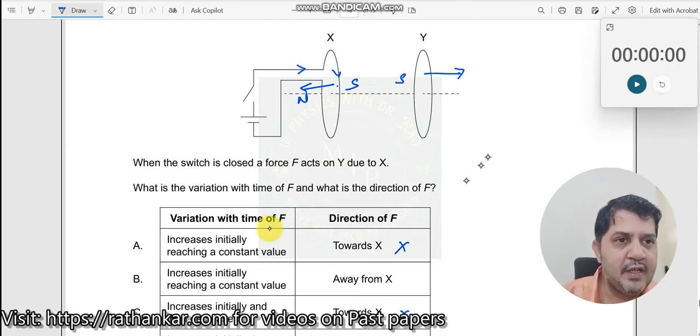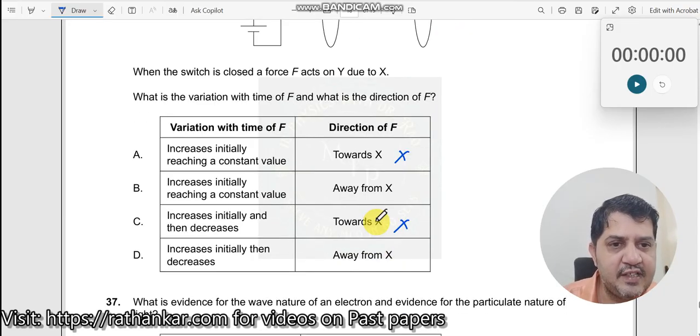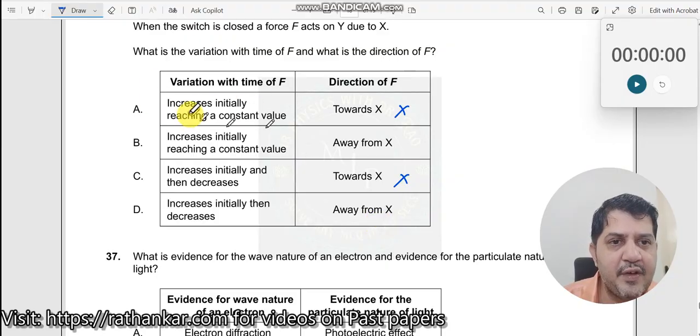And then what is the next end? Variation with time of F. So does it keep on constantly moving away? No. It acts only for a short interval of time and after that, it starts decreasing and becomes zero when the current in the coil becomes steady over here. Now let us read the question over here. Variation with time of F, how does the force vary with time?